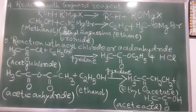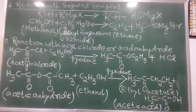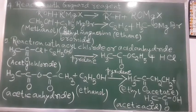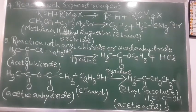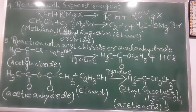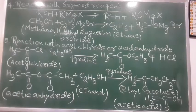I have taken an example: methanol, which is the IUPAC name of methyl alcohol. It reacts with ethyl magnesium bromide, which is of course a Grignard reagent. Methanol reacts with ethyl magnesium bromide to form ethane plus CH₃OMgBr.